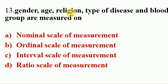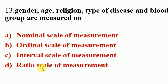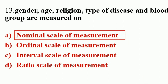Next question. Gender, age, religion, type of disease, and blood group are measured on — Options A. Nominal scale of measurement, B. Ordinal scale of measurement, C. Interval scale of measurement, D. Ratio scale of measurement. Answer is A. Nominal scale of measurement.